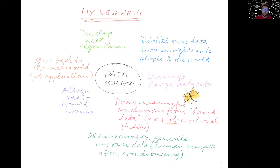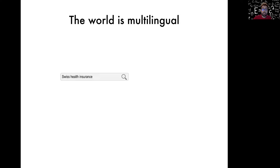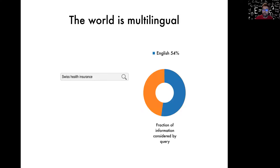This was still rather abstract, so in the next few minutes I will sample a few of these aspects with concrete projects. The first example project highlights the algorithms we like to build, and it is about cross-lingual document representations. As a motivation — the world is multilingual, the web is multilingual. Imagine you are on a web search engine and you want to learn about Swiss health insurance, a query every one of you will type should you choose to come to EPFL. If you are an English speaker, the search engine has a huge corpus — about half the web is in English — with plenty of useful information.